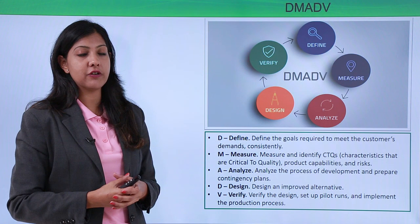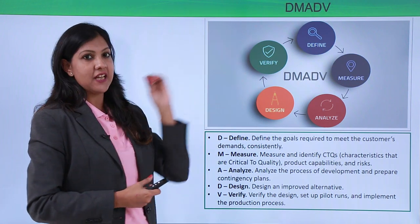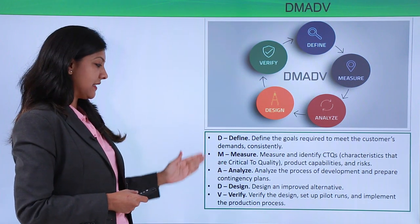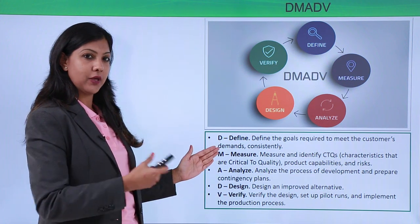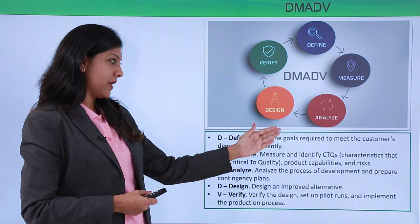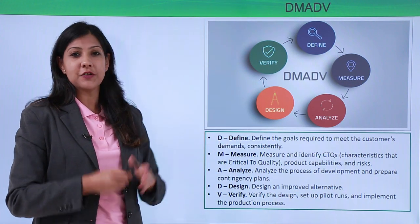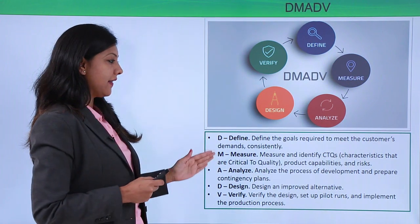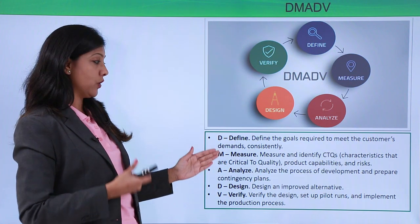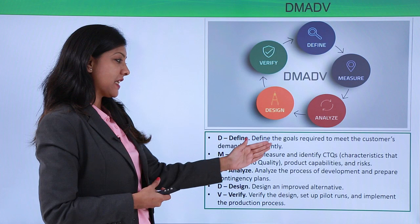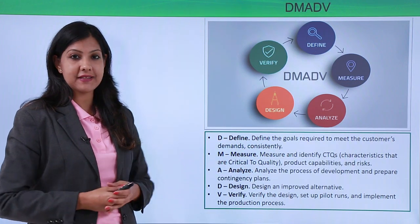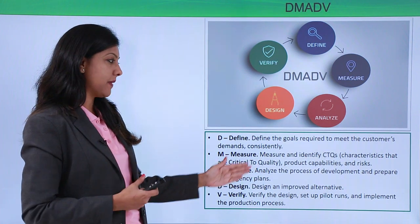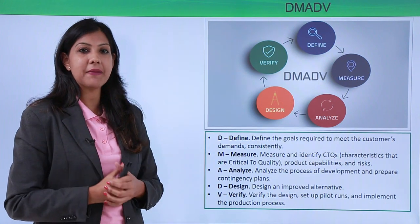The next methodology in Six Sigma is DMADV. D is for Define, M is for Measure, A is for Analyze, D is for Design, and V is for Verify. Define the goals required to meet customer demands consistently — what are your customers' demands and targets. Next, Measure the quality, including CTQ (Critical to Quality), product capabilities, and the risks involved. Analyze means you analyze the process of development and prepare the plan of action and contingency plans.